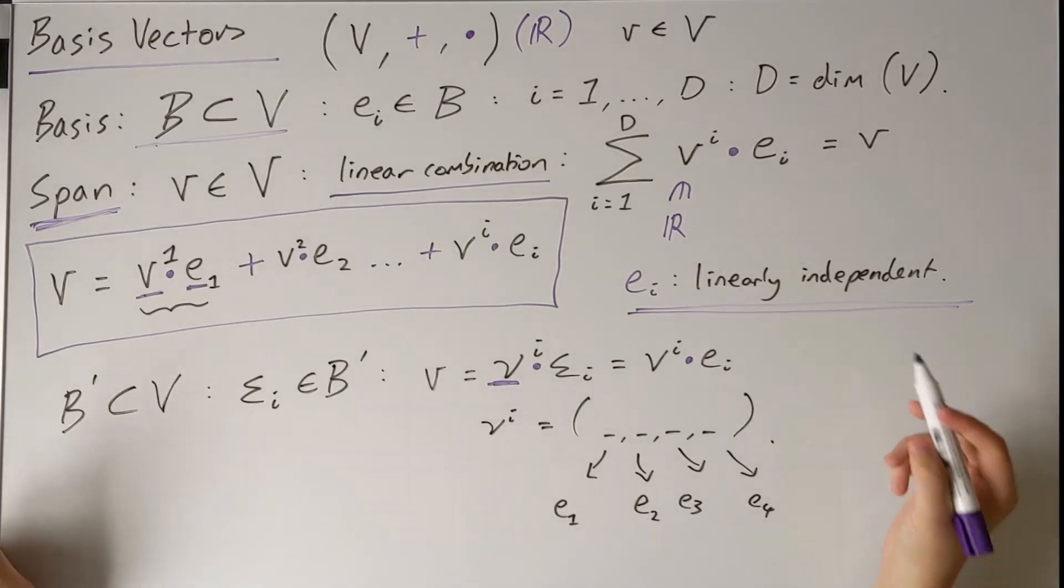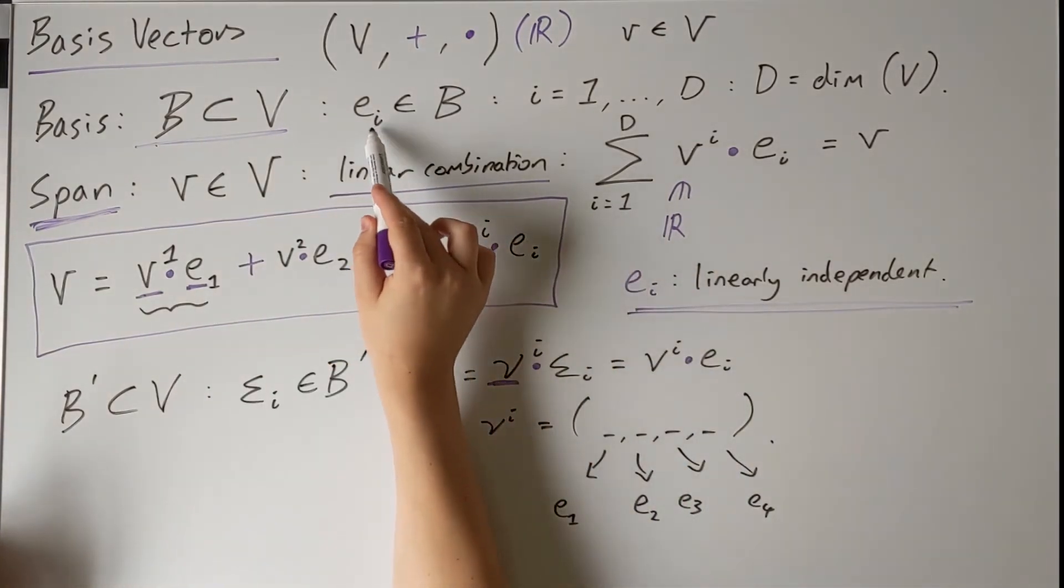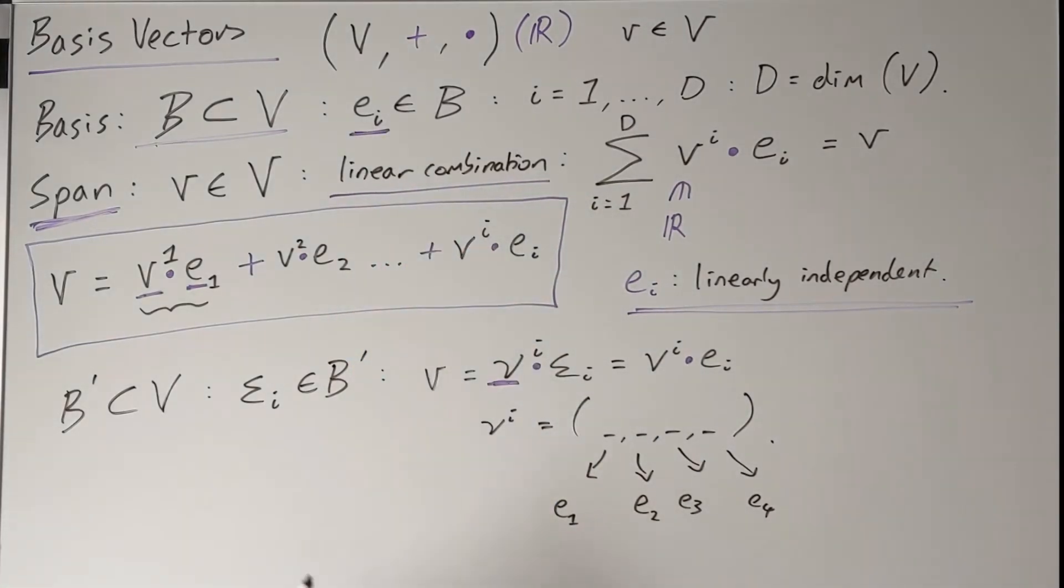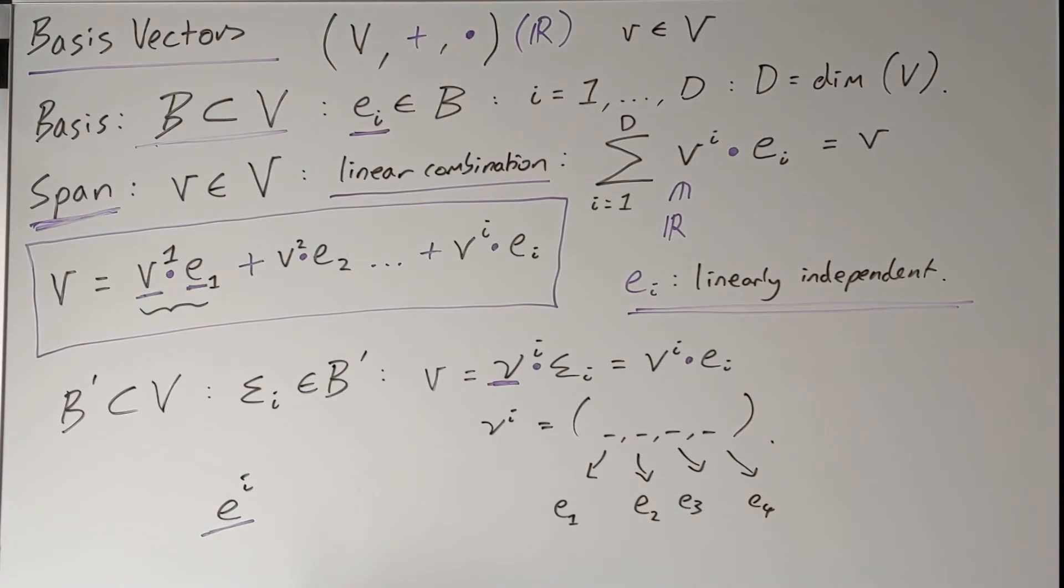So now a final point to make. When I wrote down this basis originally, I chose to use a subscript i to index the basis. I could have just as equally written down e^i to be my basis with the i index. This is simply just a notational choice at this point. It was completely arbitrary which choice I made. However,